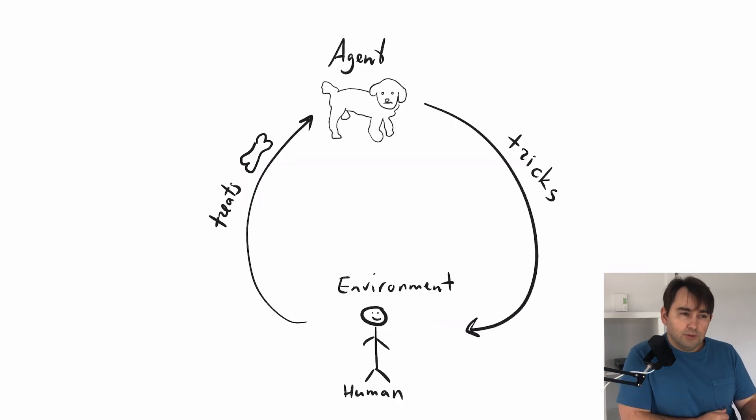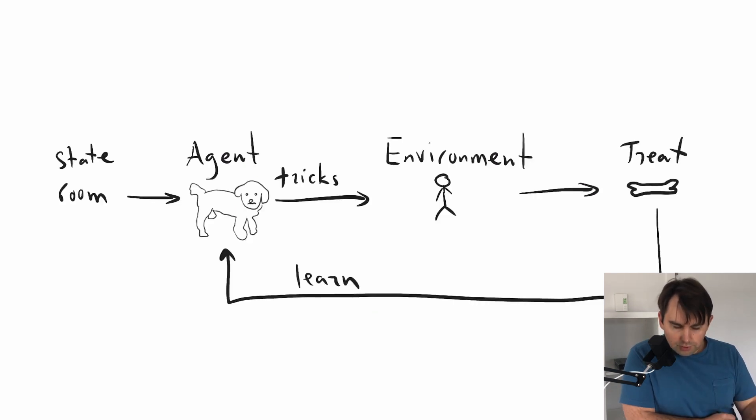Imagine you have a dog that does something that the owner likes, then the owner will give the dog a treat. And the dog will tend to remember that this action leads to a treat and will do that action more often. We can also draw this the same way we drew our environment before to see how the learning happens here. The dog uses the treat to reinforce those actions that the owner considers good.